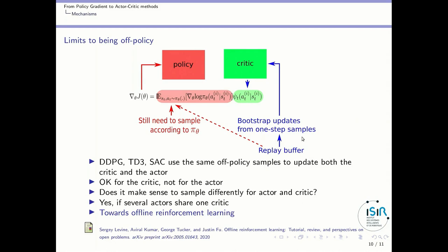In actor-critic algorithms like DDPG, TD3, and SAC, we use the same samples to update both the actor and the critic. We can say those samples are okay for updating the critic, particularly if you are using a rule close to a max. But this is not okay for the actor, because to apply your gradient, you should sample according to the current policy. So we are introducing some bias, and this is why those algorithms are quite unstable.